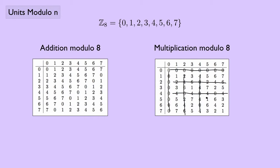5 seems okay. 6 is no good, so we get rid of that. And 7 seems to be okay. So it looks like if we limit ourselves to 1, 3, 5, and 7, maybe this is a group. Let's check this out further.